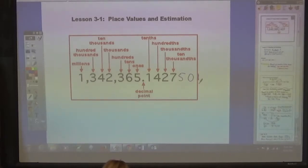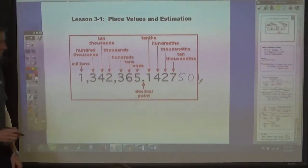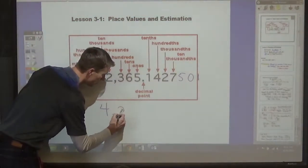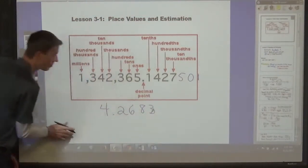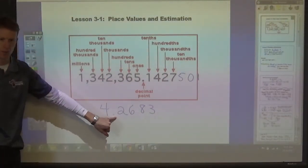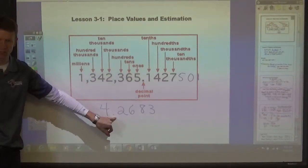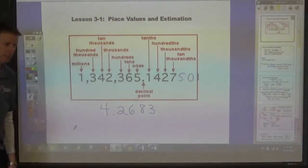When you're rounding something, so let's say that we were rounding the number in example one to the nearest tenth. Four and two thousand, six hundred eighty-three ten thousandths. First of all, you say 'and' when you see the decimal point, so this is four and two thousand, six hundred eighty-three ten thousandths.